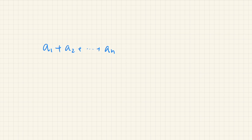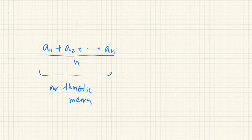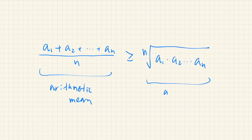In this video, we show that the arithmetic mean of n numbers — that is (a1 + a2 + ... + an) / n, where a1 through an are non-negative numbers — is always greater than or equal to the geometric mean, that is the nth root of the product of these numbers.